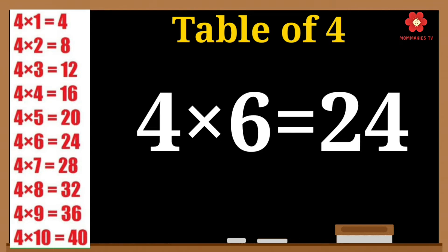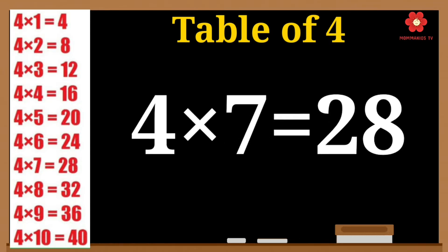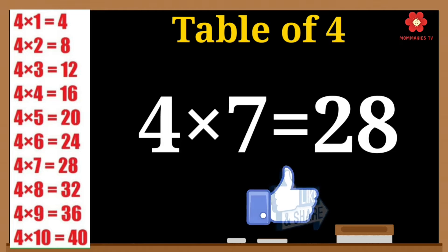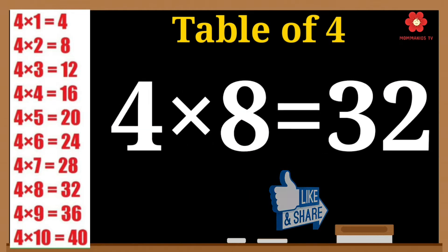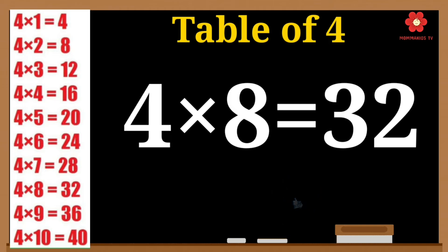Four sevens are twenty-eight. Four eights are thirty-two.